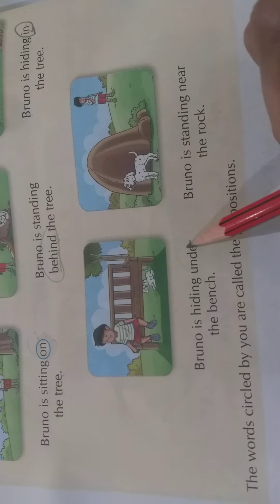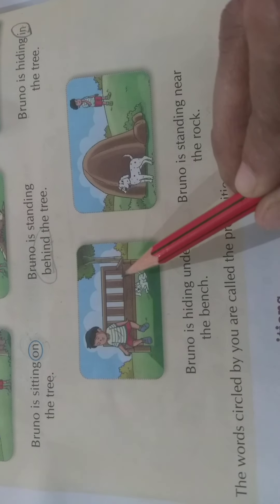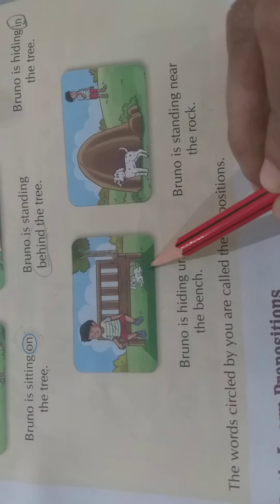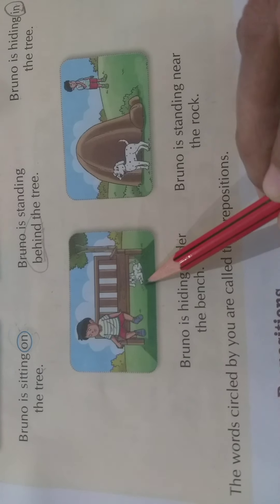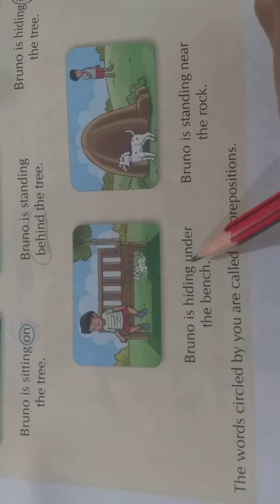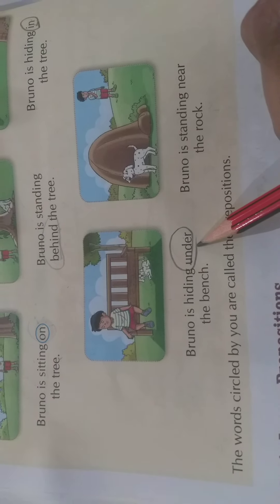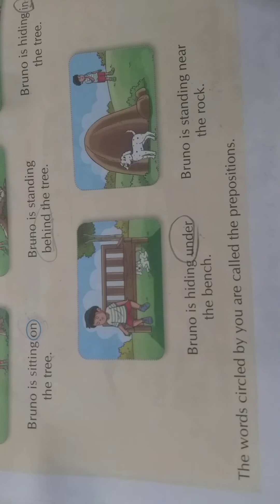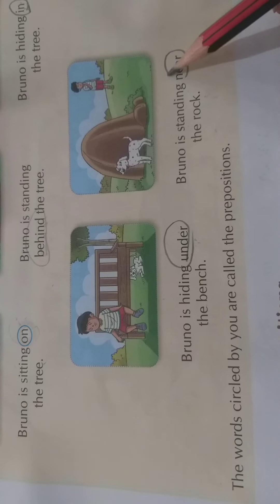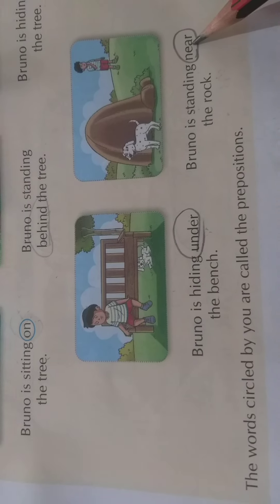Now Bruno is hiding under the bench — he is niche (below). Niche means under. That is the preposition word. Bruno is standing near the rope — he is near a stone, paas (close by). Near means paas. Near is the preposition word in this sentence.